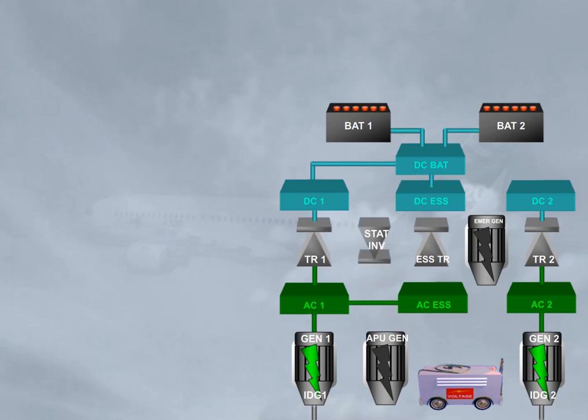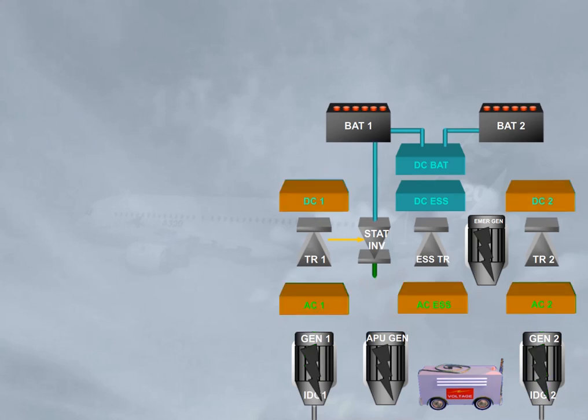Finally, a static inverter allows part of the AC electrical network to be supplied from battery 1 when only batteries are connected. On the ground, it supplies an AC static inverter bus, and battery 2 will partially supply the DC essential bus. In flight, it also partially supplies the AC essential bus, and battery 2 partially supplies the DC essential bus. However, the DC BAT bus is not supplied.